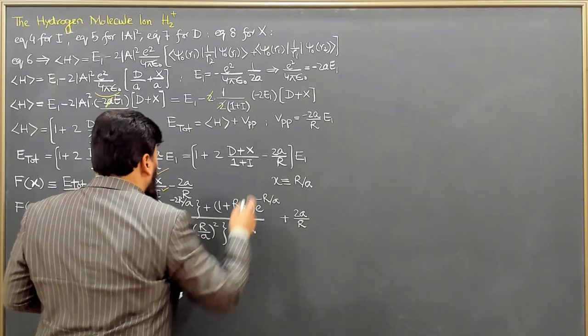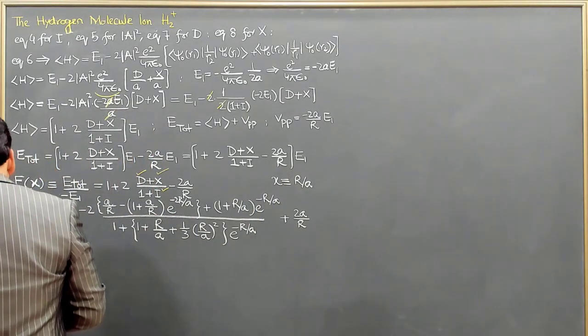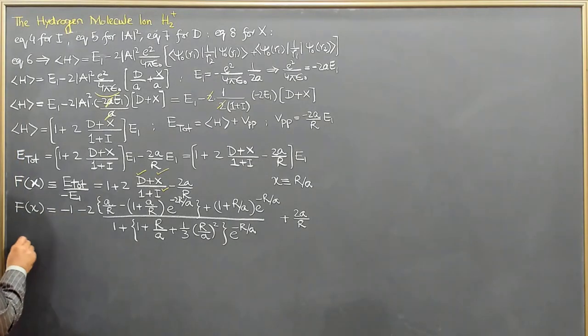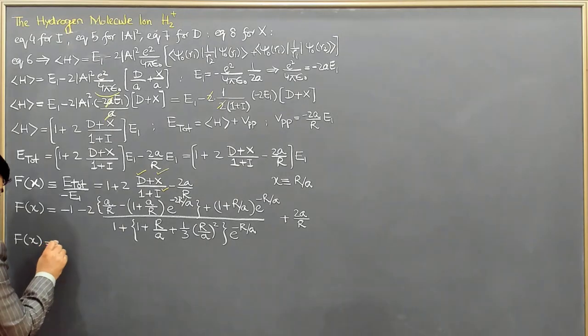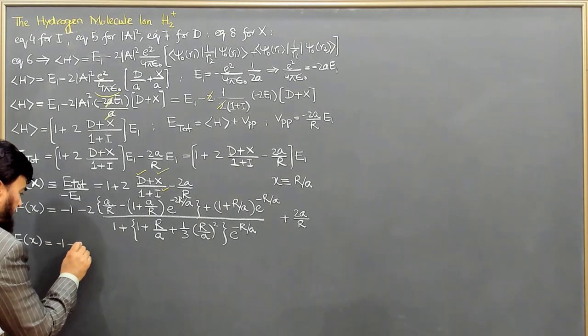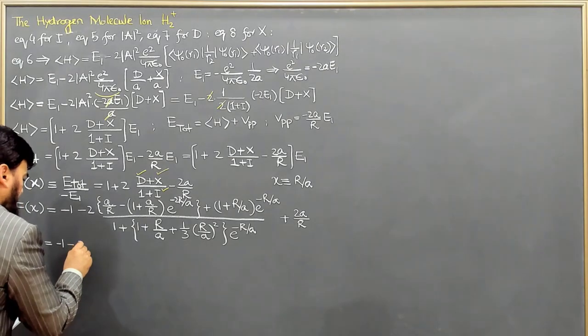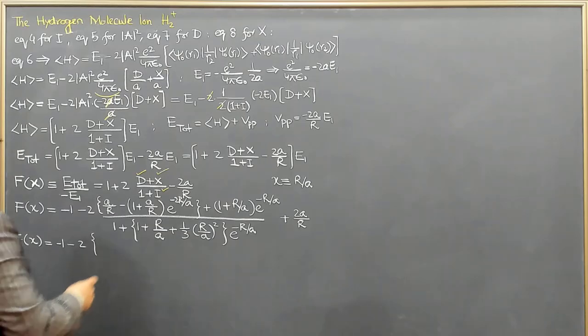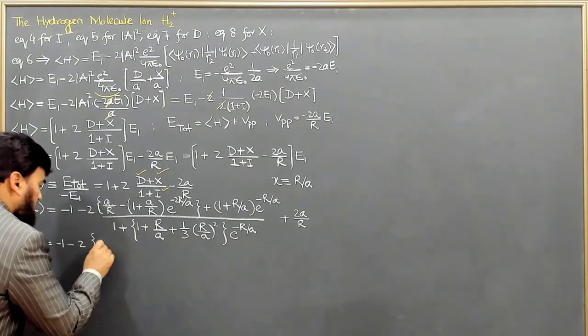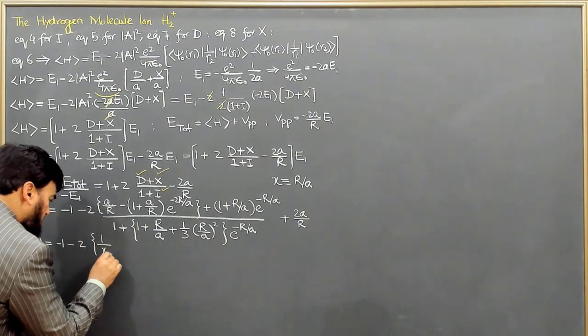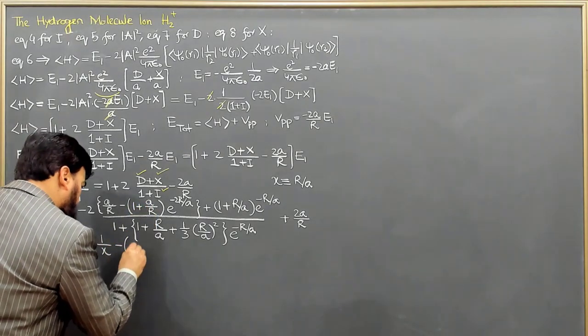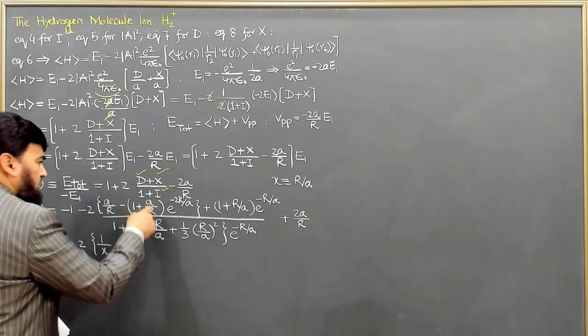We are defining r over a. Then I can write this equation as f of x is equal to minus 1, and then minus 2 here, and then start over here. As this is a over r, so it will come out to be 1 over x minus, then we have 1 plus a over r.